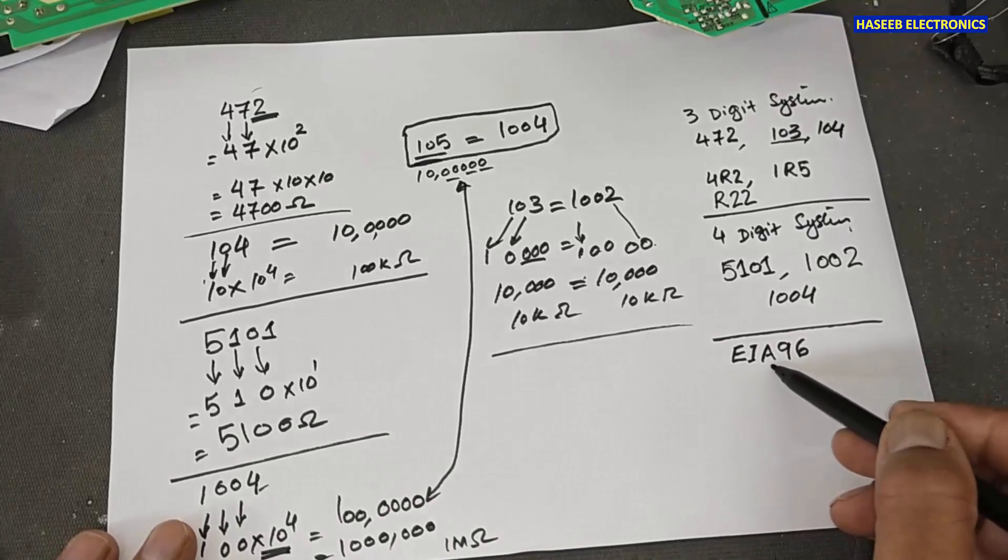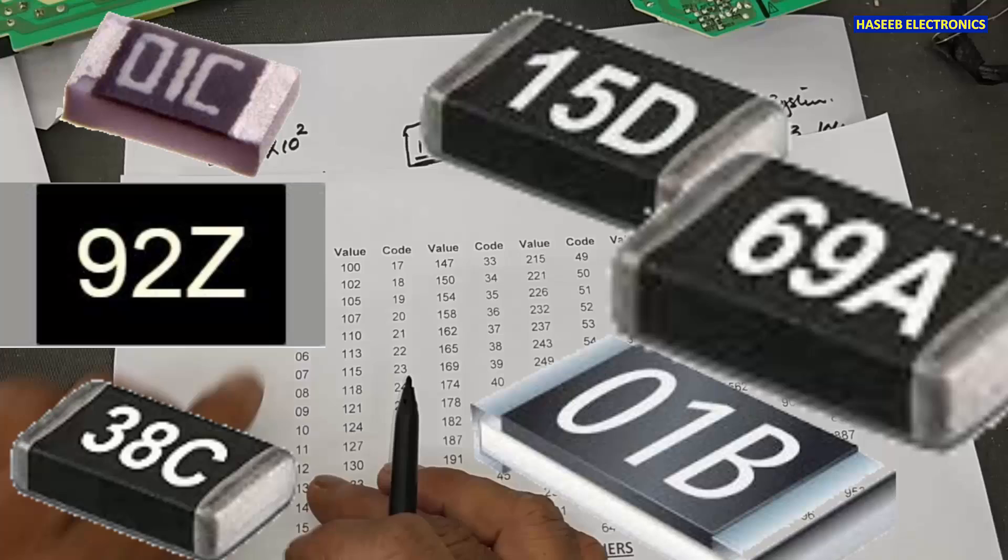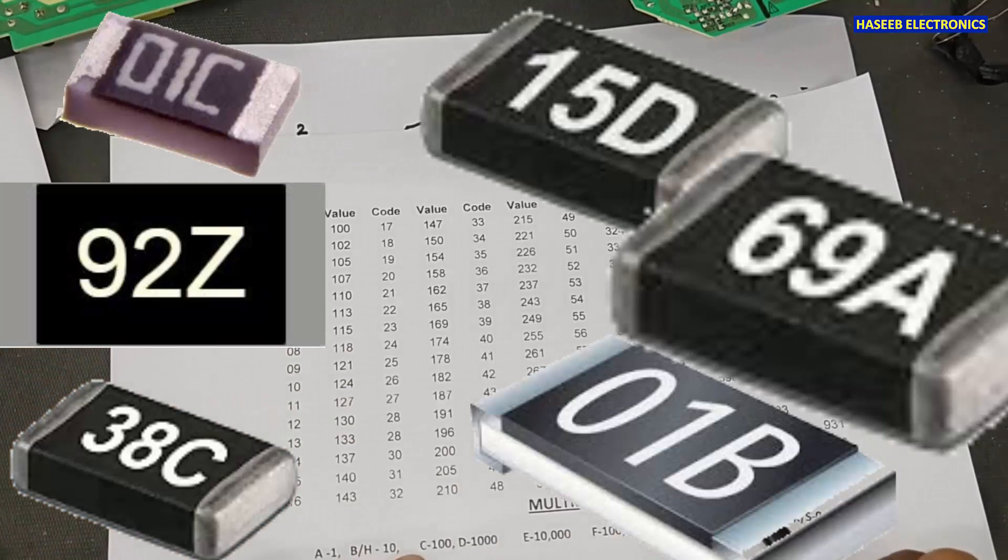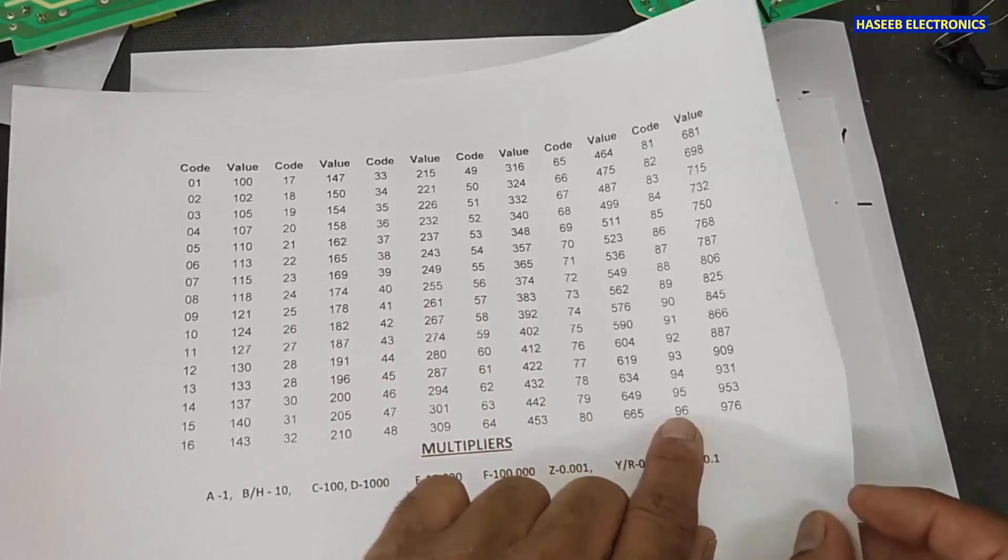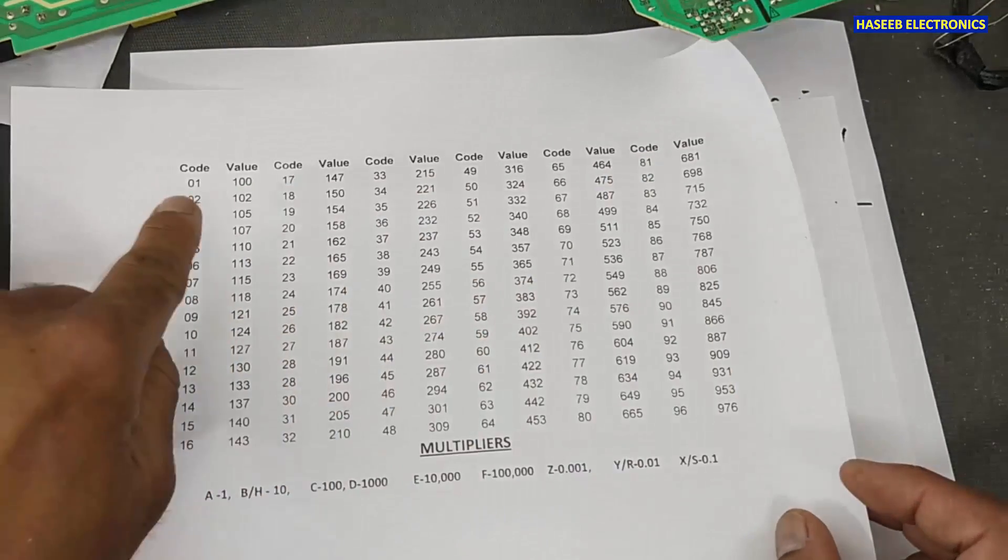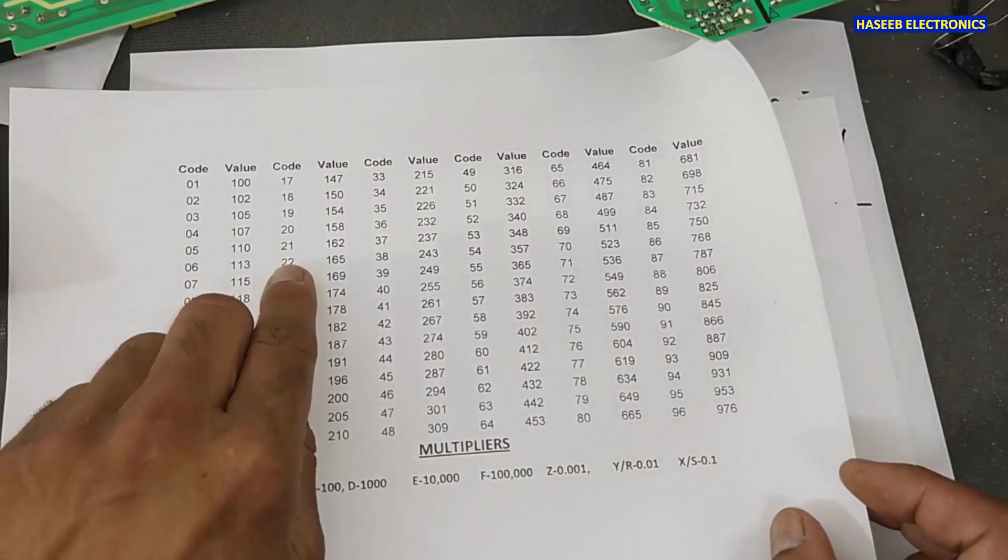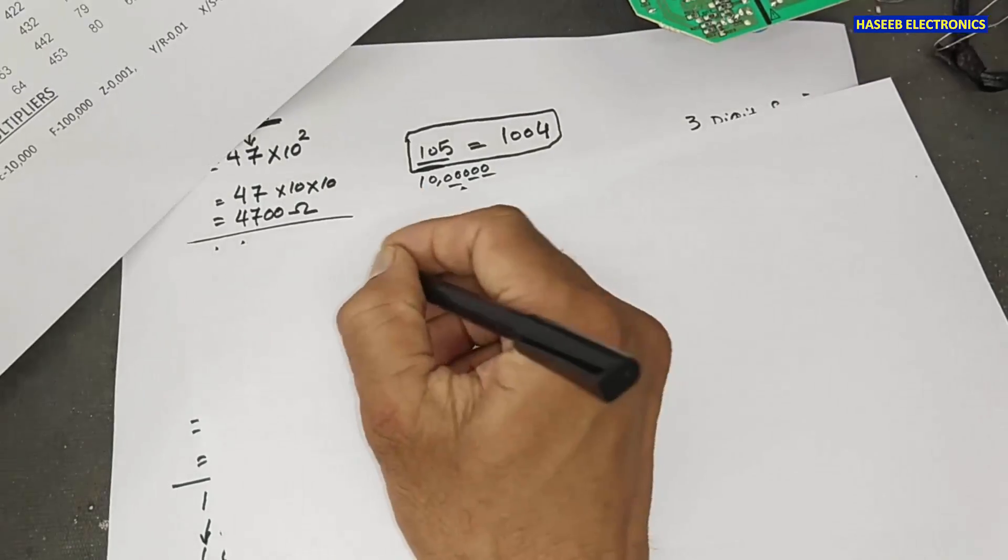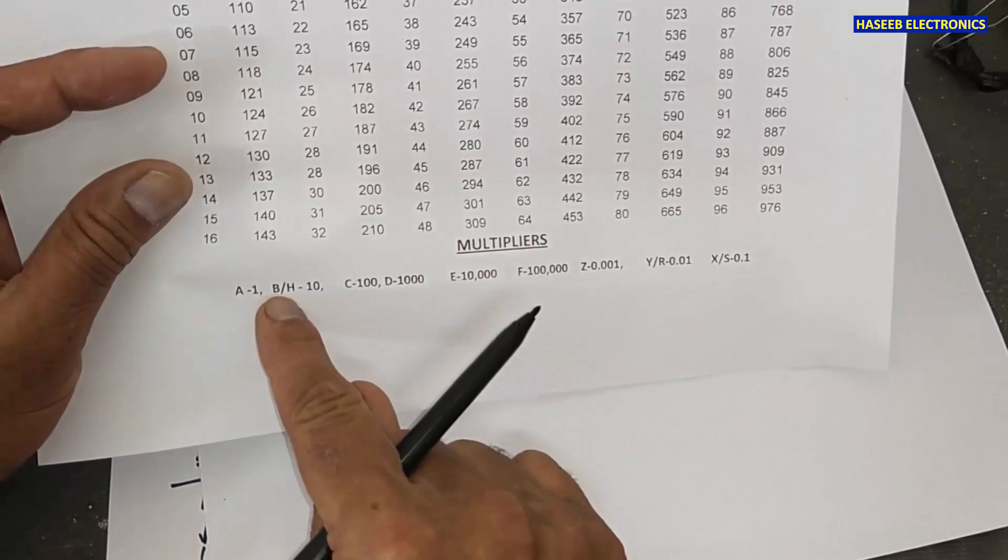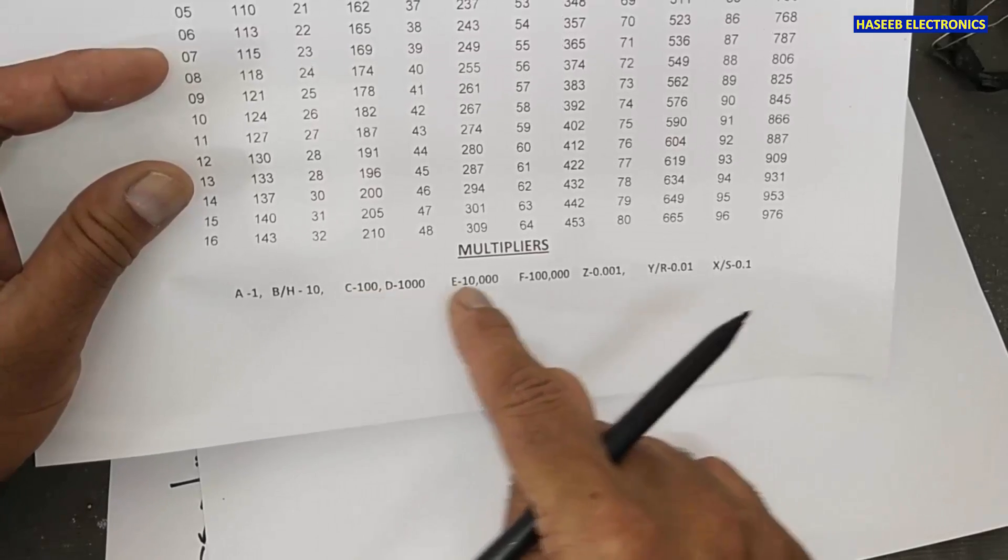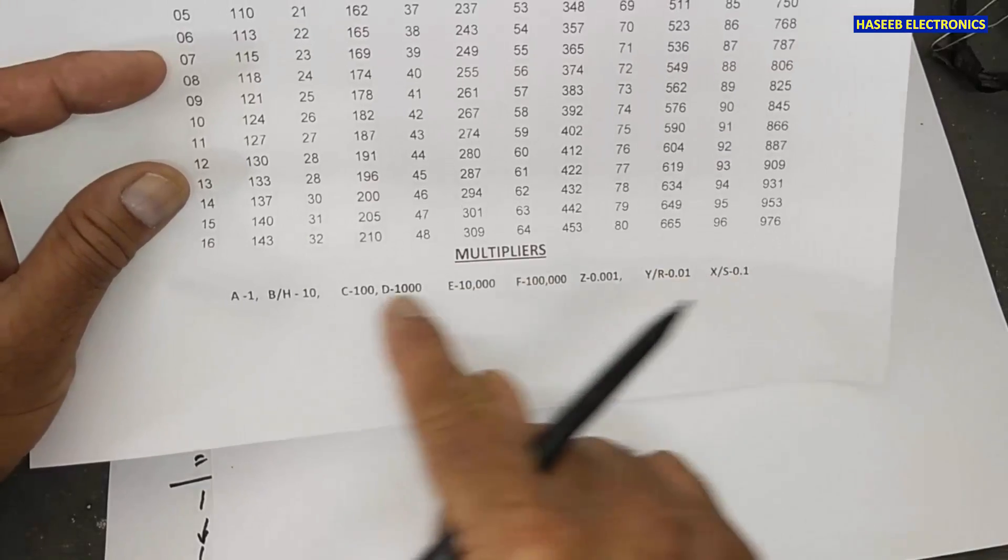The next system that is EIA 96 system. Sometimes, we have marking 01C. In EIA 96 system, it have 96 numbers, codes. It is a resistor code. 01 to 96. For example, if I have 22 and then there is multiplier. A, B, or H, C, D, E, F, Z, Y, or R, X, or S. This is multiplier.